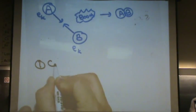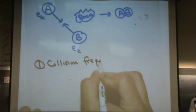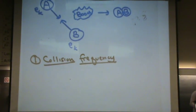One, collision frequency. We saw this in the gas chapter. It's the number of collisions per time, per unit time. So ten collisions per unit time, a million collisions per unit time, that sort of thing.